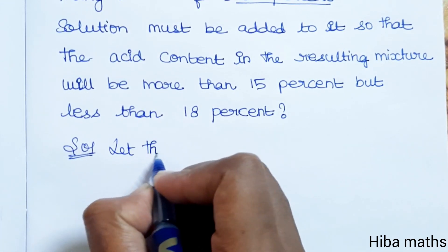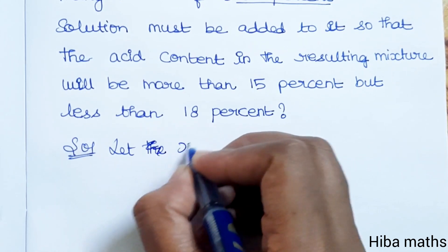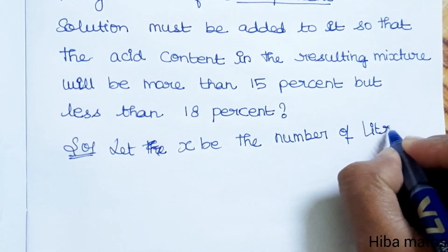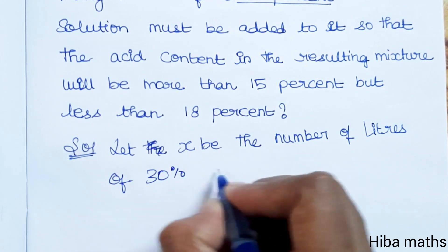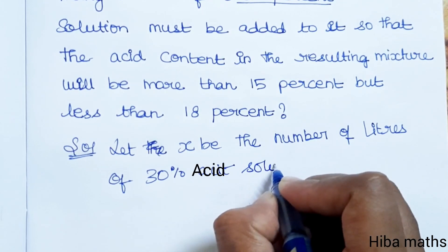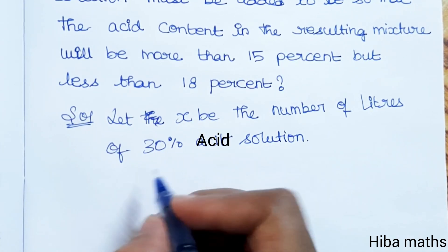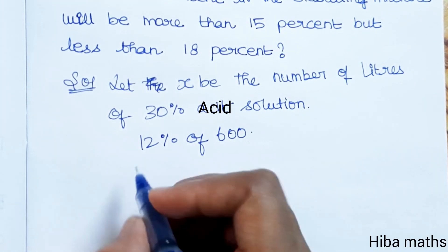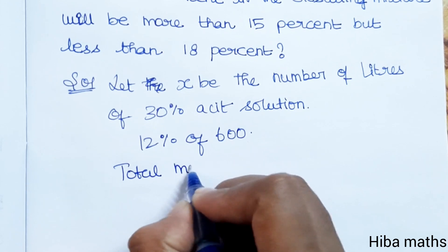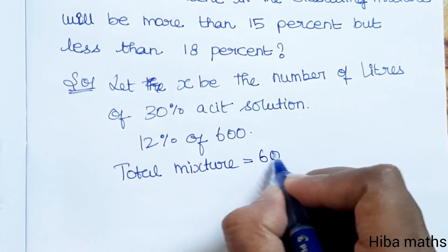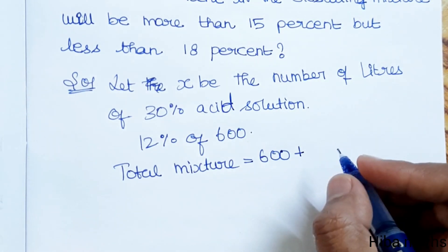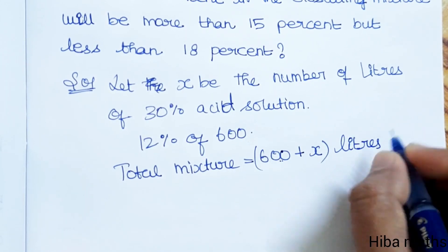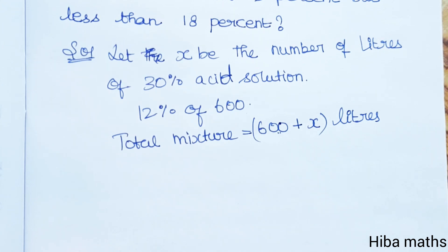Solution: Let x be the number of liters of 30% acid solution to be added. The total mixture will be 600 plus x liters. We will now add the percentages to set up the inequality.